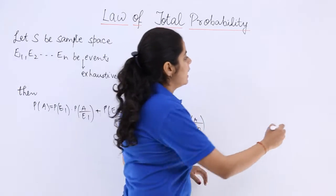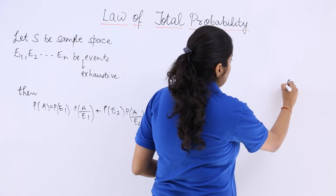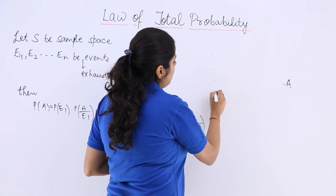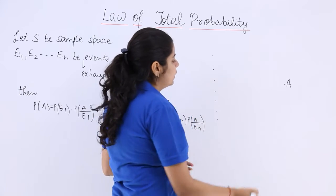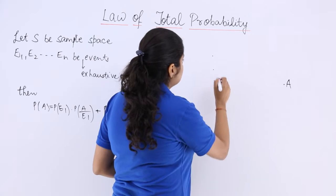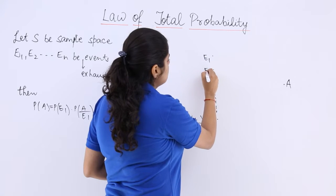So if I say there is A that I have to achieve, A is possible by computing in n different ways. So what happens is this is E1, this is E2,